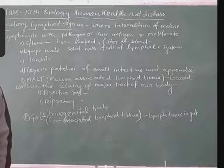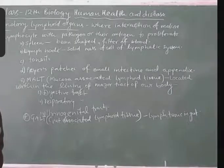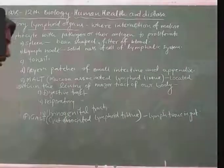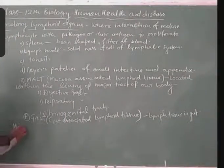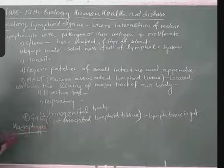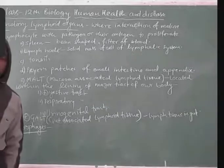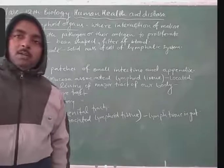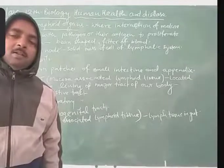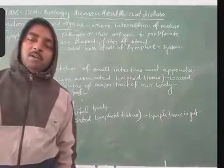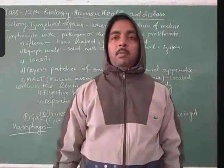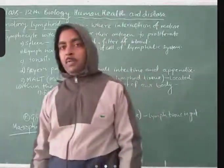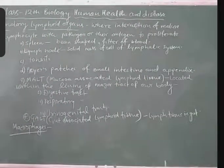This is all about the secondary lymphoid organ. The next topic is macrophages. Macrophages are specialized cells which are involved in phagocytosis. They are big-sized cells responsible for phagocytosis of pathogens in our body. Along with phagocytosis, they also perform some other functions. So macrophages are specialized cells.